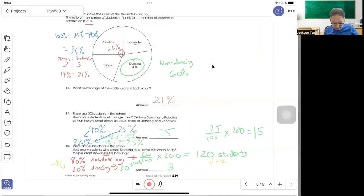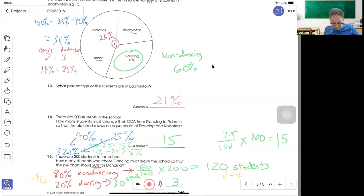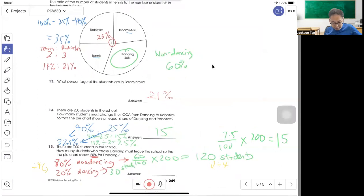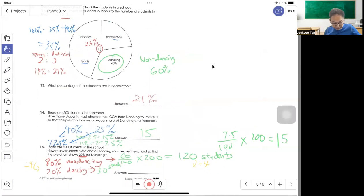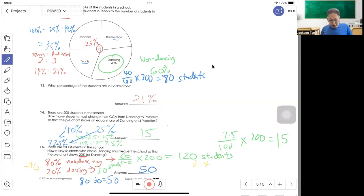Currently 40%, 40 out of 100 from 200 there are only 80 students. So from 80 want to become 30, right, means you need to minus 50. So 50 students must dance in the school.